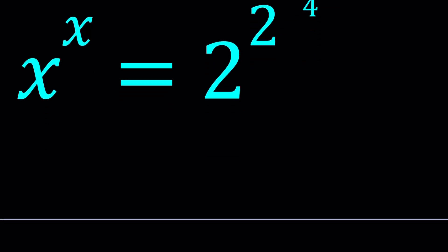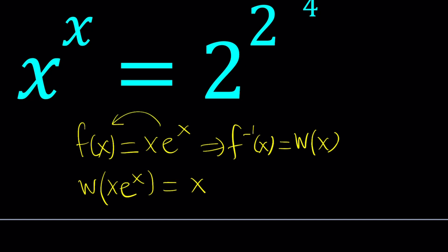Lambert's W function is basically the inverse of the function x e to the x. So if f of x is defined as x e to the x then its inverse can be defined as Lambert's W and basically what Lambert's W function does is it takes x e to the x and turns it into x.